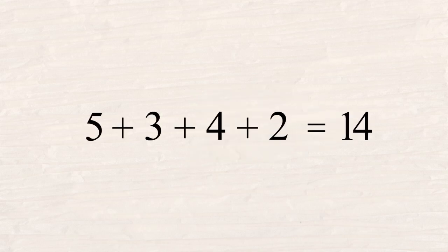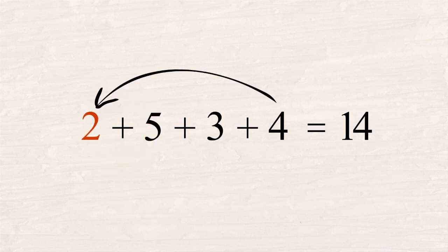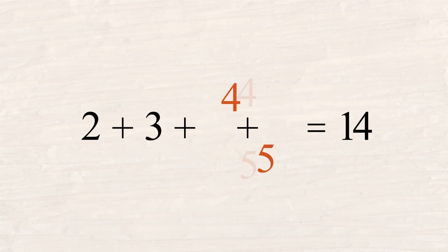The commutative property can be applied to addition operations involving more than two numbers. By switching adjacent pairs of numbers, operands can be reordered in any way we please. For instance, in this addition involving four operands, the two at the end could be moved up to the front, or the five could be moved to the back.